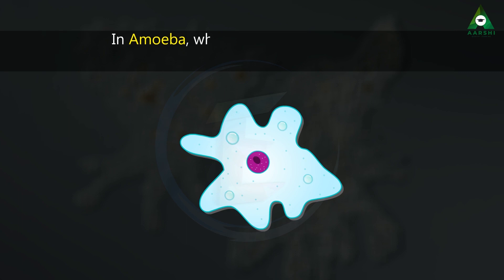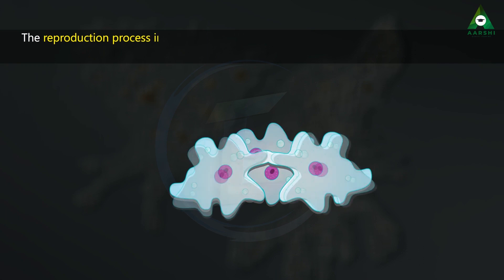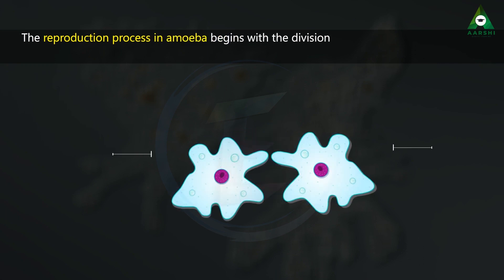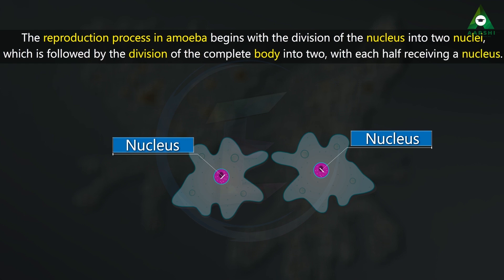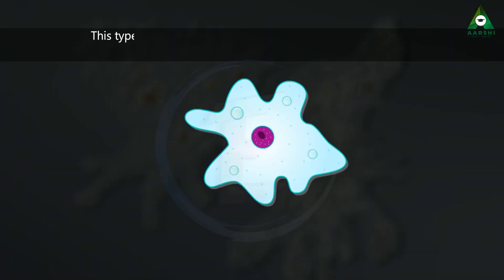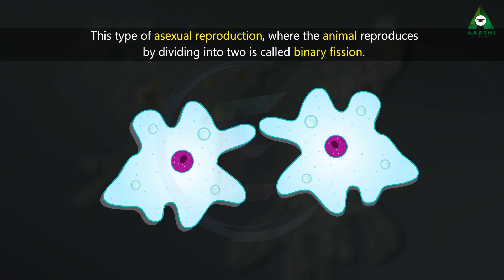In amoeba, which is a microscopic organism, the mode of reproduction is through binary fission. We are all aware of the fact that amoeba is a unicellular organism. The reproduction process in amoeba begins with the division of the nucleus into two nuclei, which is followed by the division of the complete body into two, with each half receiving a nucleus. Therefore, two amoeba are produced from a single organism. This type of asexual reproduction where the animal reproduces by dividing into two is called binary fission.